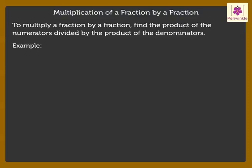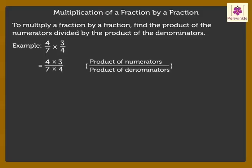Let us take an example. 4 upon 7 into 3 upon 4 is equal to 4 into 3 upon 7 into 4. Further, simplify by reducing 4 from the numerator and denominator. Thus, we get 1 into 3 upon 7 into 1 which is equal to 3 upon 7.